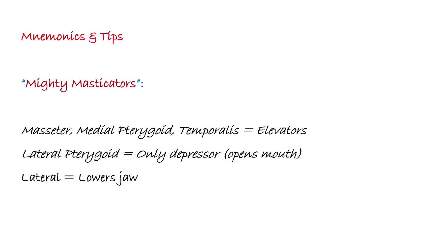Here is a trick to remember — a mnemonic: 'Mighty Masticator.' Masseter, medial pterygoid, and temporalis are elevators of the mandible. The lateral pterygoid is the only one that lowers or opens the jaw. Just remember: lateral is lower.